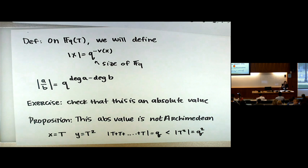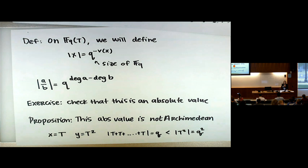Does this mean there's no absolute value on this field that makes it Archimedean? I found that question in Gouvea's book and thought about it for a few minutes without finding one. All the absolute values I know on F_Q(T) are non-Archimedean. It's possible that characteristic zero is necessary for an Archimedean absolute value — exercise: google this and report back, or prove it.